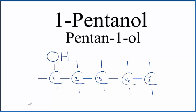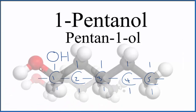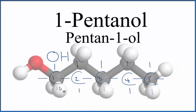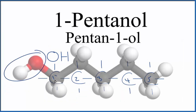If we looked at this in three dimensions, that would look like this. The blacks are the carbons, the whites are the hydrogens, and the red is oxygen. So this OH right here is on that first carbon, carbon number one. And that's why we call this 1-pentanol, or pentan-1-ol.